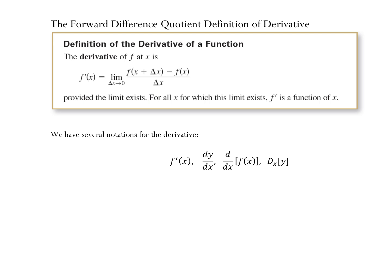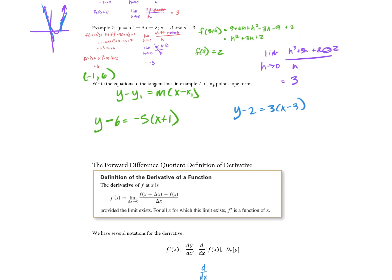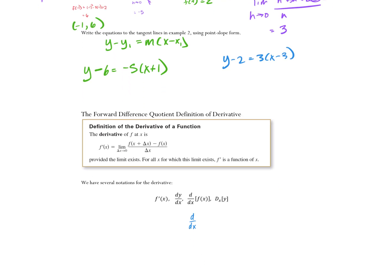Don't worry about one of these — I'll never use it. We could say that we're doing d/dx of x² minus 3x plus 2. That just means it's an operation: take the derivative of. Everybody good?